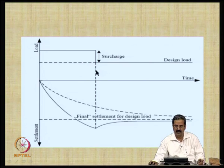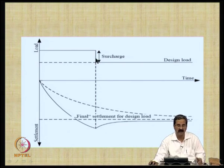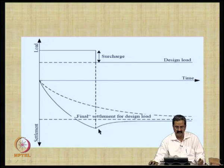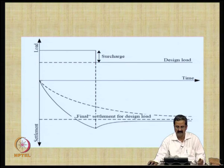The design load is, say, 100 kPa, but you put 150 or 200 kPa — you calculate how much surcharge should be applied. What happens is that the final settlements will follow the expected pattern, and this is an effective technique for accelerating consolidation settlements in clay soils. The key output is the time T2 — the time for equivalent settlement with surcharge — which is a very useful input into the whole design process.